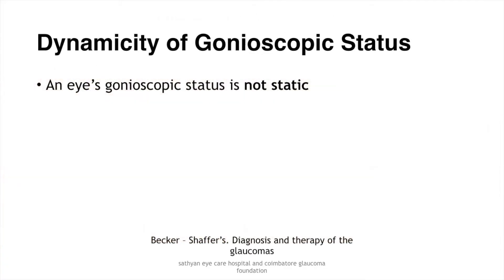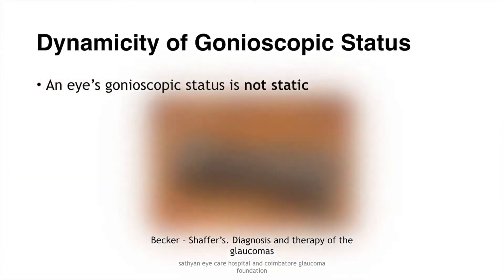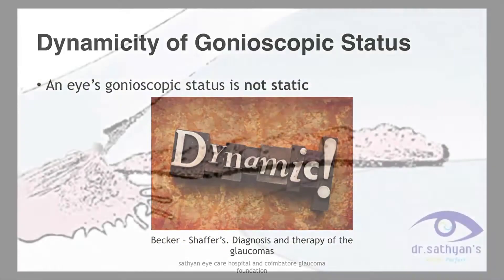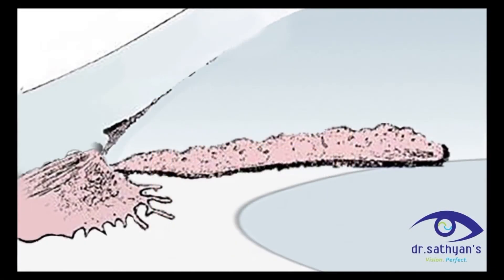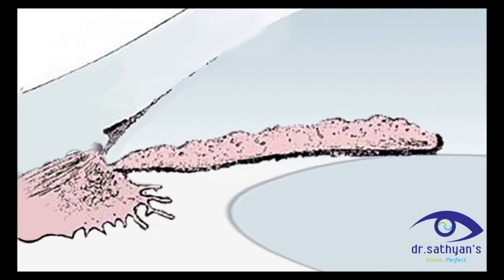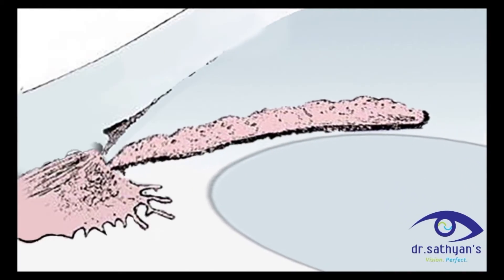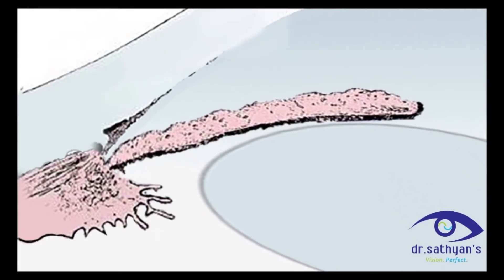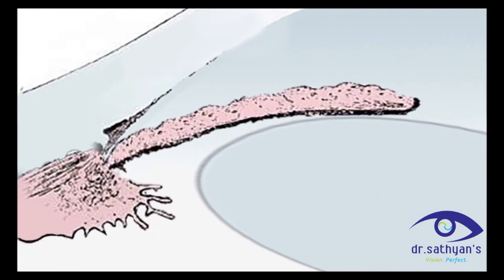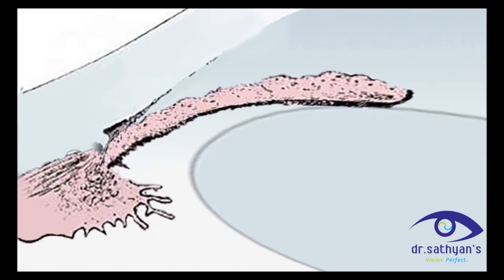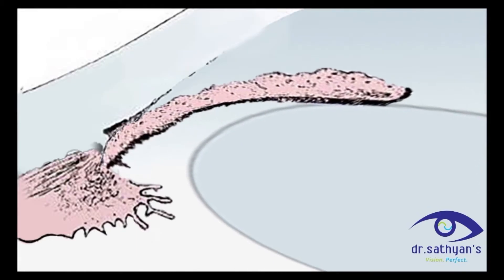An eye's gonioscopic status is always dynamic. In angle closure suspects, with increase of age, when lens thickness increases, the patient may end up with an acute angle closure attack of glaucoma.